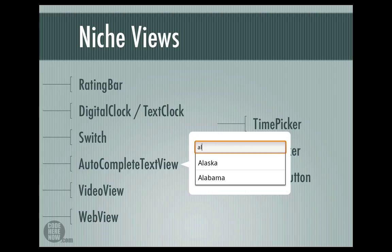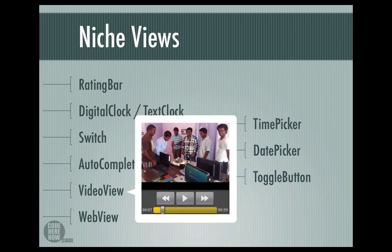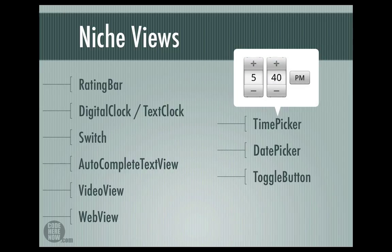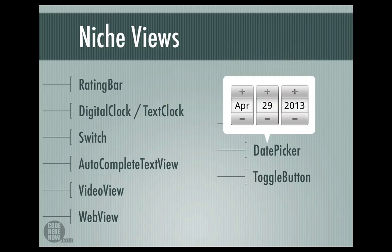The autocomplete text view looks similar to an edit text — it allows you to type in text and shows suggestions based on what you have typed. The video view allows you to play videos, and the web view allows you to embed a web browser inside your application; if you want to render a web page or HTML page inside your application you can use a web view. A time picker allows you to select or pick a time, and there is a sophisticated version called the time picker dialog. We also have a date picker and a date picker dialog that allows you to pick a date.